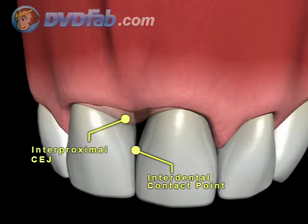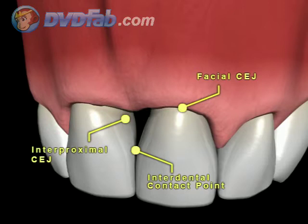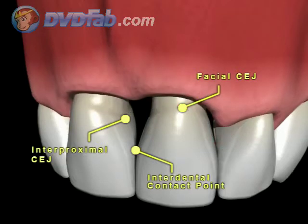A Class 2 papilla has the tip of the interdental papilla lying at or apical to the interproximal CEJ, but coronal to the apical extent of the facial CEJ. A Class 3 papilla — the tip of the interdental papilla — lies level with or apical to the facial CEJ.